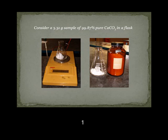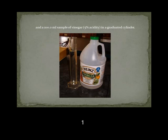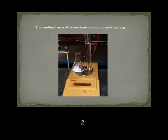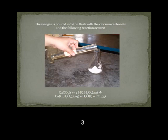Consider a 5.32 gram sample of 99.87% pure calcium carbonate in a flask and a 100.0 milliliter sample of vinegar with 5% acidity in a graduated cylinder. The combined mass of the reactants and the containers is 255.98 grams. The vinegar is poured into the flask with the calcium carbonate and the following reaction occurs.